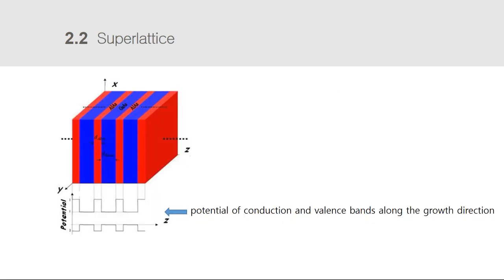Instead of bulk semiconductor materials, a QCL consists of a periodic series of thin layers of varying material composition, forming a superlattice. Because the superlattice has a varying electric potential across the length of the device, electrons can occupy different positions over the length of the device. The superlattice shown in the picture is made of two semiconductor materials with different bandgaps, and is therefore related to the one-dimensional multiple quantum well that we studied in class.